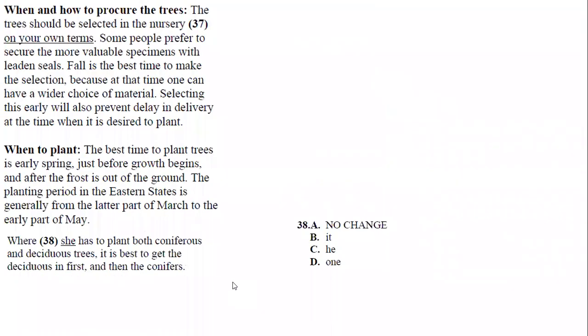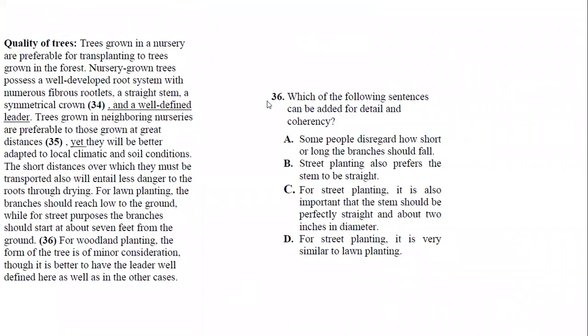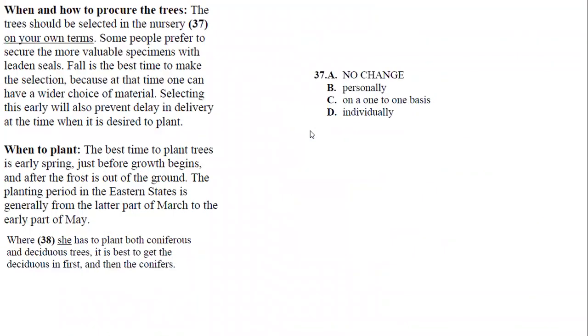Number 37 asks you here about the word that gives you the meaning. So I have to go back and read the sentence: when and how to procure the trees. The trees should be selected in the nursery. Some people prefer to secure the more valuable specimens with pleated seals. So this is talking about preferences, so we're going to use the word personally because you're talking about your preference. Okay, so that's why your answer is B.